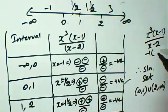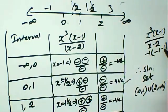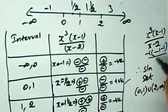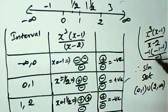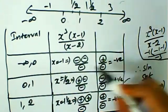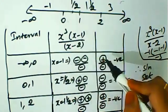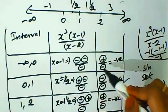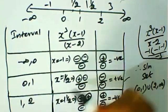For x minus 1, substituting minus 1 gives minus 2, which is negative. For x minus 2, substituting minus 1 gives minus 3, which is negative. We have minus times minus times minus, so the overall result is negative.